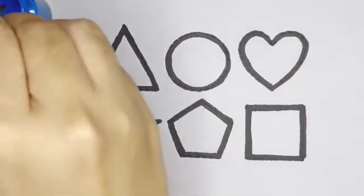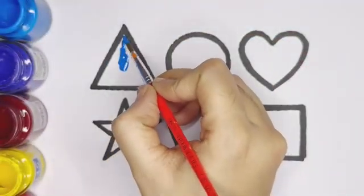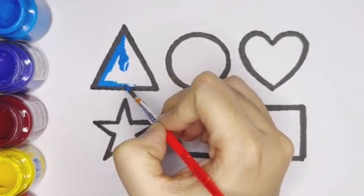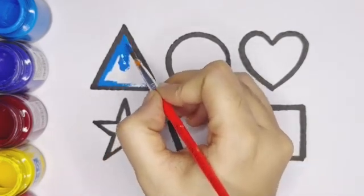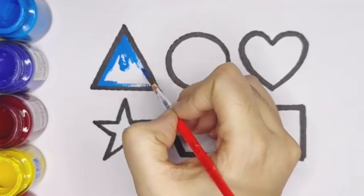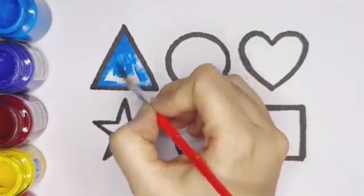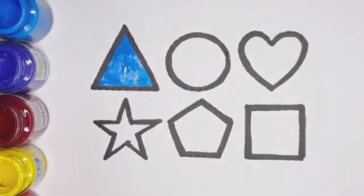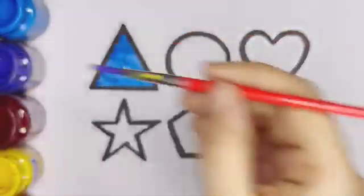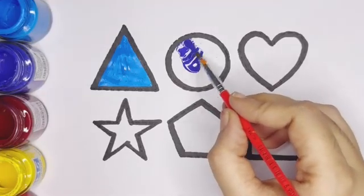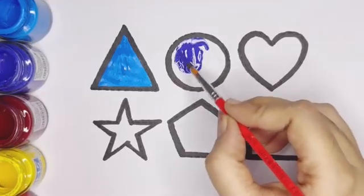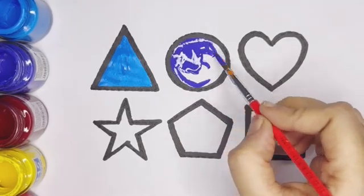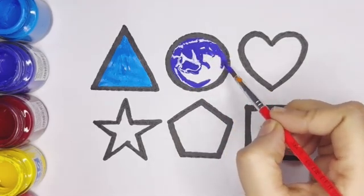Let's color the shapes. Sky blue color triangle. Violet color circle.